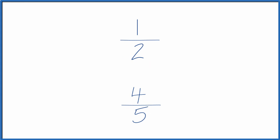If we have a common denominator, we just compare the numerators to figure out if one-half is greater than four-fifths or four-fifths is greater than one-half.